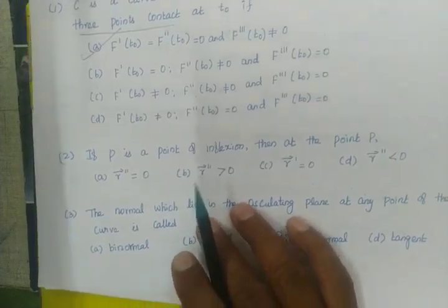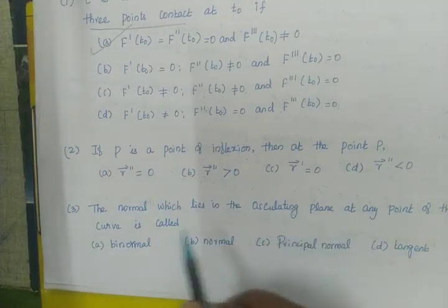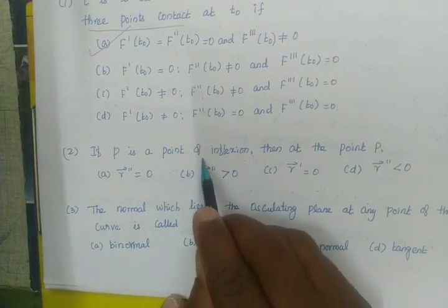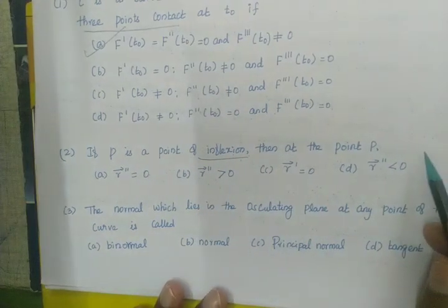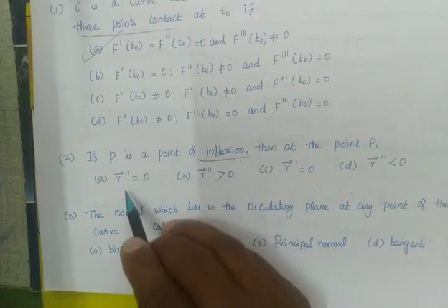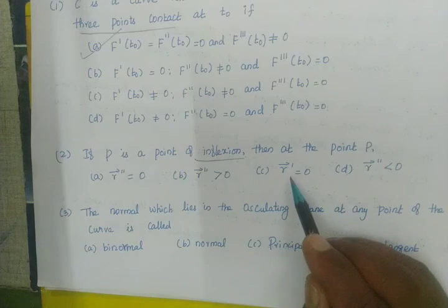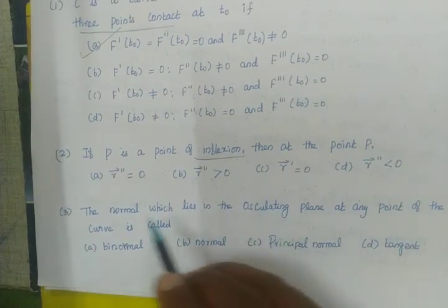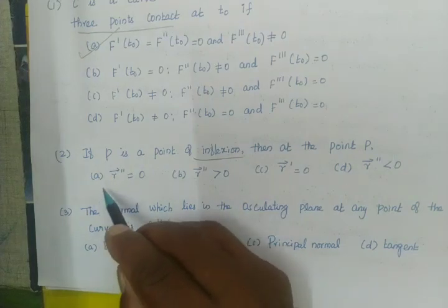If P is a point of inflection, then at point P, the correct option is R double dash vector equal to 0. R vector double dash equal to 0 is the condition for a point of inflection.